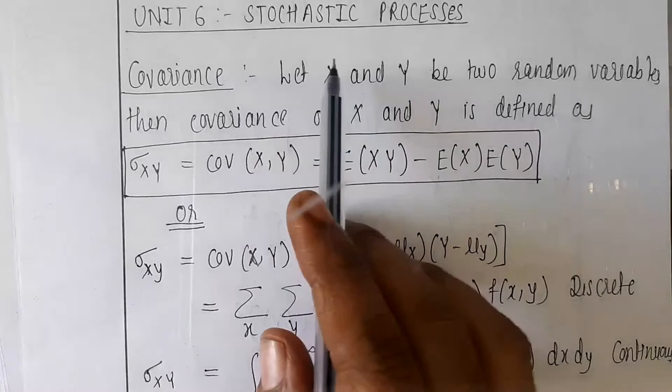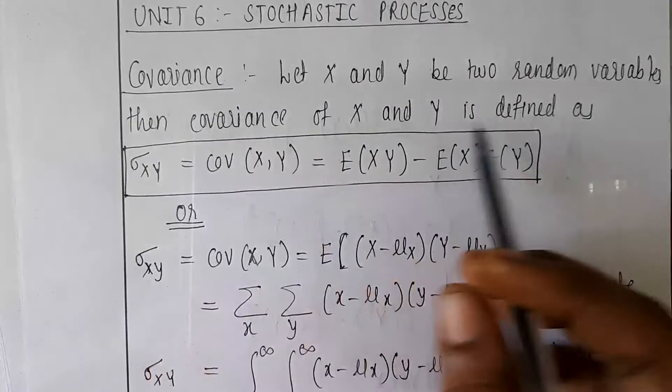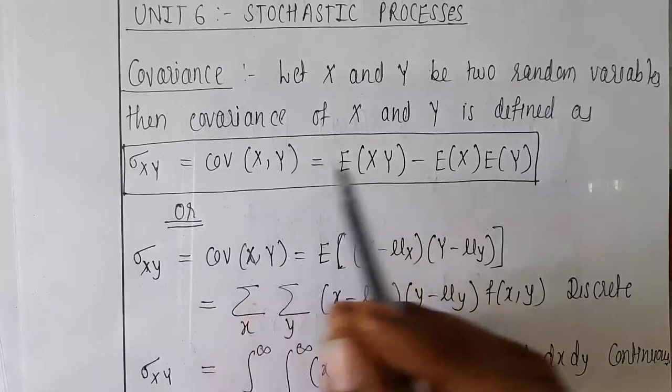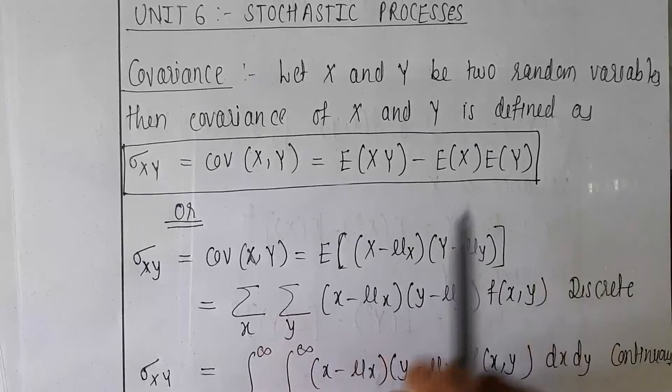Hello all, welcome to Lecture Unit number 6 on stochastic processes. In this unit, we are first going to study covariance. Let X and Y be two random variables. Then the covariance of X and Y is defined as sigma of XY, which equals the expectation of XY minus the expectation of X into the expectation of Y.